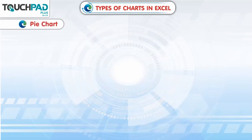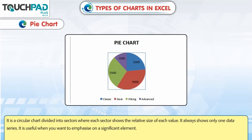Pie chart: It is a circular chart divided into sectors where each sector shows the relative size of each value. It always shows only one data series. It is useful when you want to emphasize a significant element.